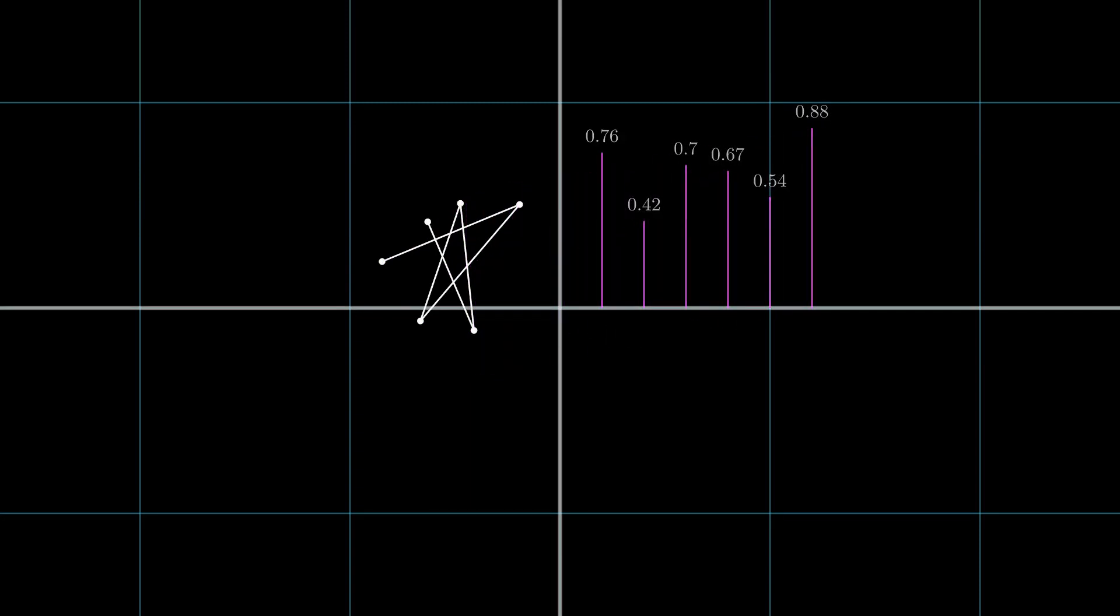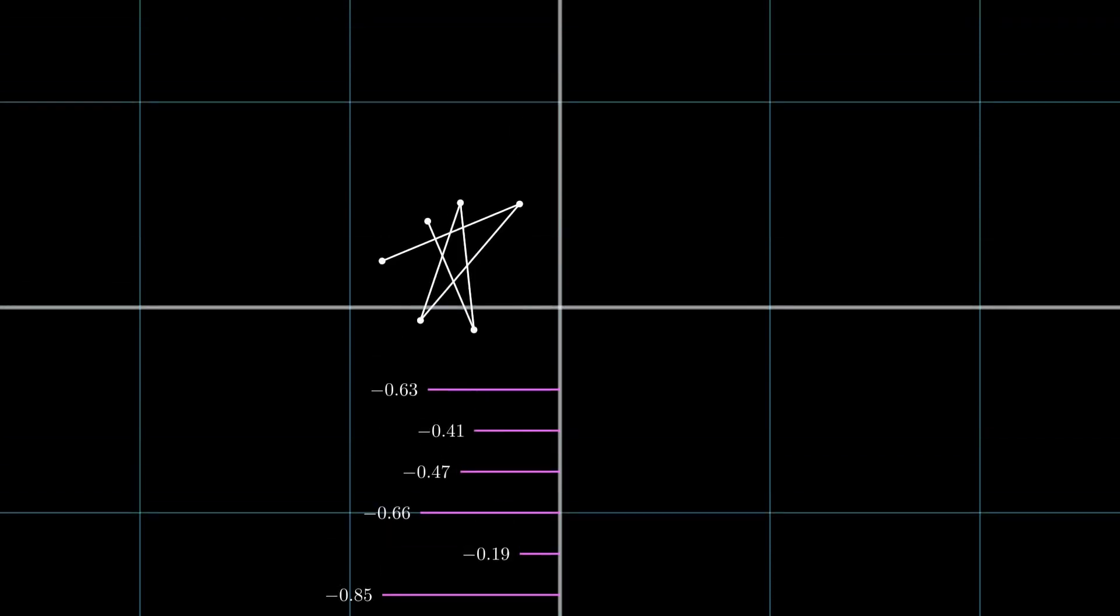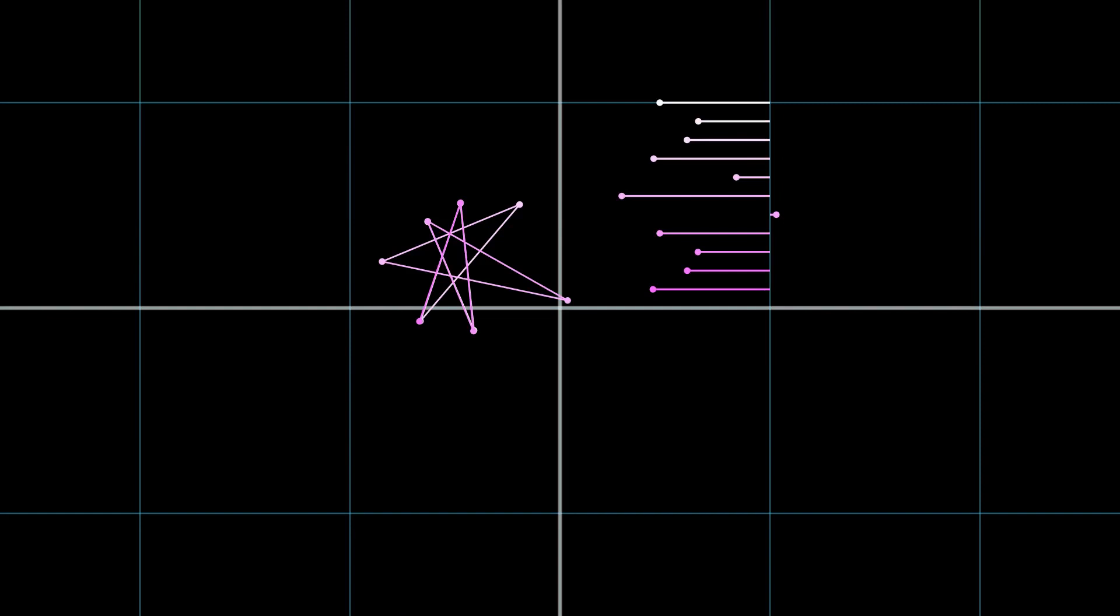Another value that we can measure is the real component of each point. Or in other words, the distance and direction from the y axis. Now we have another one dimensional value that can help us visualize the cycles.